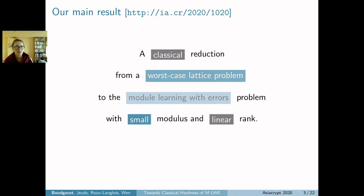Our main result can be summarized in the following statement: We show a classical reduction from a worst-case lattice problem to the module learning with errors problem with a small modulus and a linear rank.